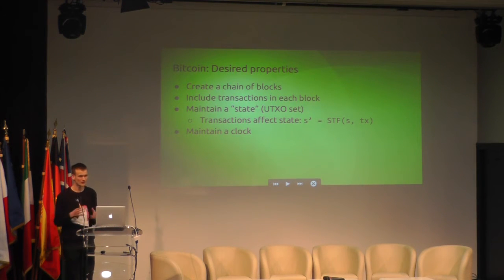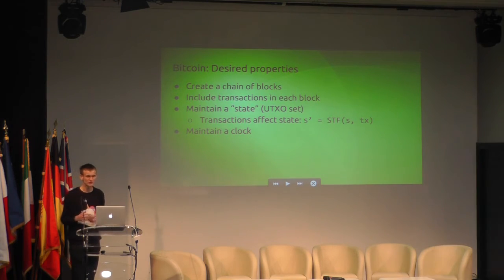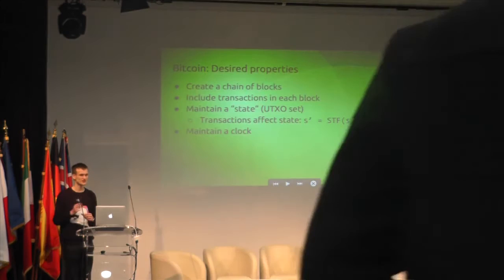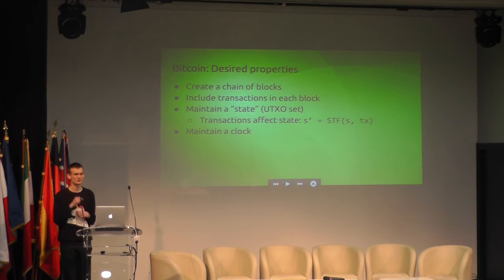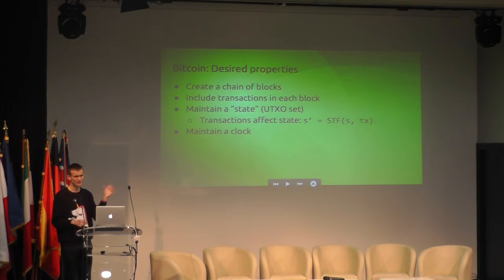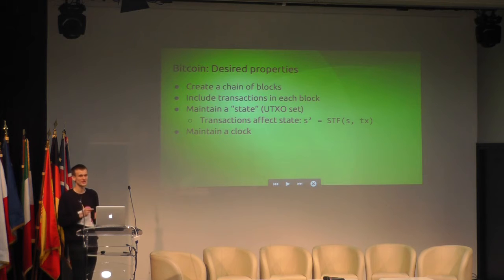To go through a quick example: if you look at something like Bitcoin, it has a few desired properties. You can think of these at many different levels. At a higher level, it exists to provide peer-to-peer digital currency. But at a lower level, you can think of the system as existing to create a chain of blocks, to include transactions that users send into those blocks, and to maintain a notion of state. In Bitcoin, the state is called the UTXO set, but you can think of it as representing how much money everyone has. There's a function that takes an old state, applies a transaction to it, and gives you a new state. For example, if the old state says I have 500 Bitcoins and Vlad has 100 Bitcoins, and a transaction is that I send Vlad 10 Bitcoins, the new state is that I have 490 Bitcoins and Vlad has 110 Bitcoins.